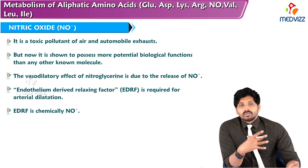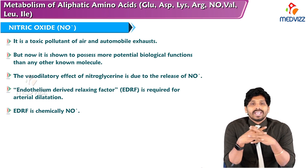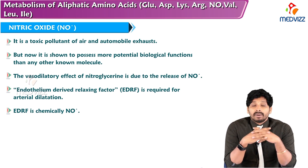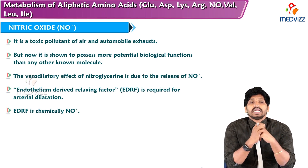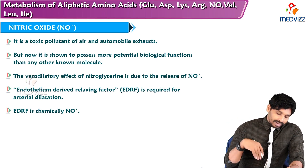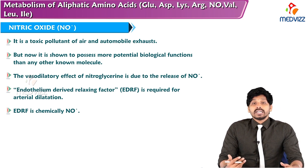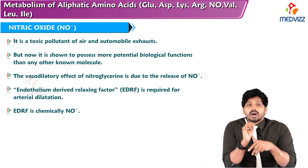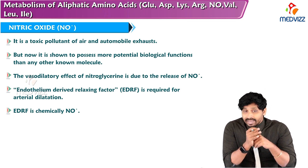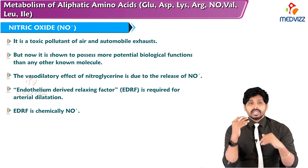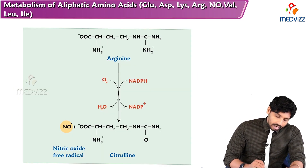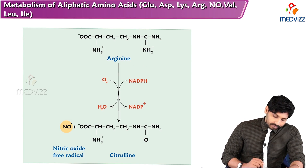First we'll talk about nitric oxide and its importance. Although we know it from automobile exhaust, nitric oxide has been shown to possess more potential biological functions than any other known molecule. The vasodilatory effect of nitroglycerin is due to release of nitric oxide, and endothelium-derived relaxing factor required for arterial dilation is chemically nitric oxide. Arginine undergoes cleavage to form citrulline in the process.